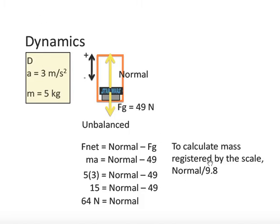Now, to calculate the mass registered by the scale, all we do is we take the normal force and divide by 9.8. And in this situation, interestingly, the recorded mass on the scale would be 6.5 kilograms larger than 5 kilograms.